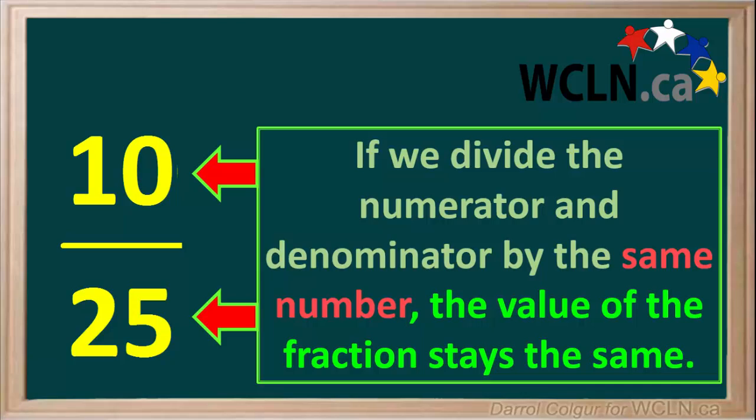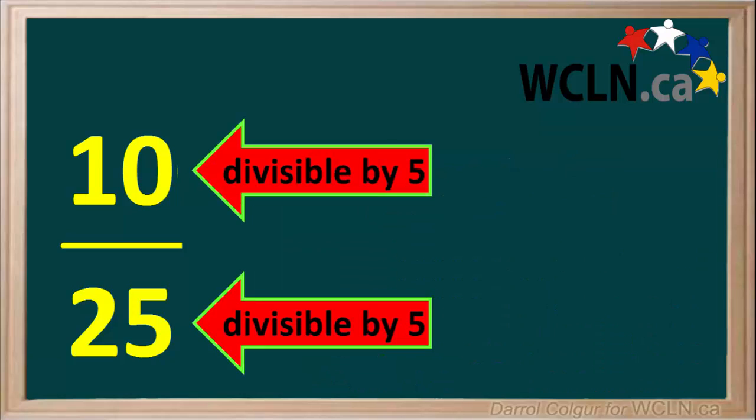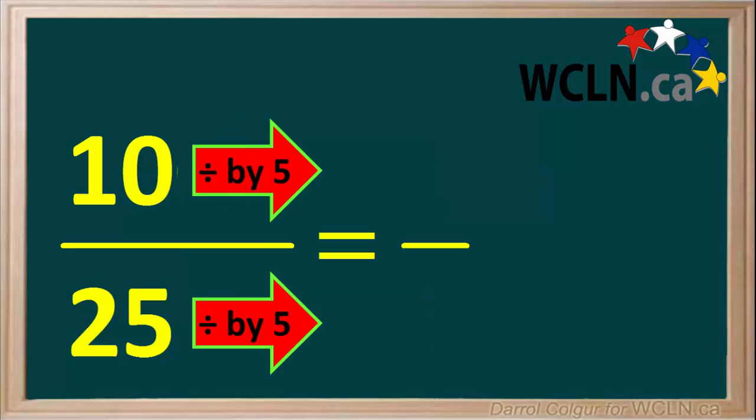Let's find the largest number that will divide into both 10 and 25. The largest number that will divide into both 10 and 25 is 5. So we'll divide both 10 and 25 by 5 to give us another fraction. 10 divided by 5 is equal to 2, and 25 divided by 5 is equal to 5.